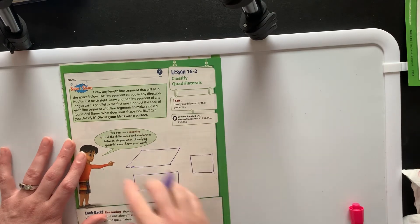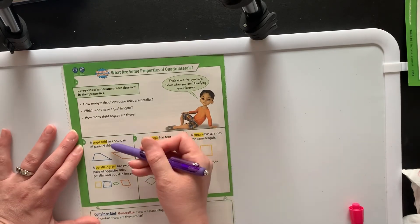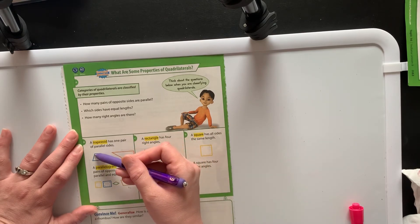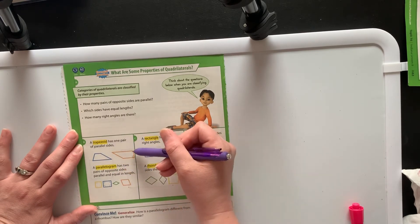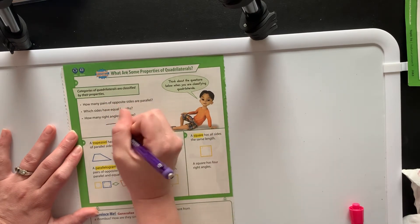And then again, just real briefly, trapezoid has one pair of parallel sides, can be shaped lots of different ways. Can be shaped sort of like this, that's all wonky. We can have part of it have some right angles, or you can have kind of the classic trapezoid shape.